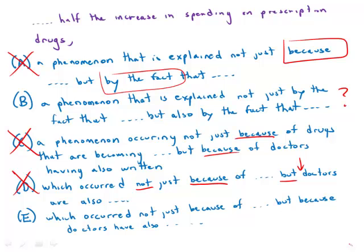Answer E correctly has 'not just because... but because,' placing the word because after both the not and the but — that's good. But looking carefully, the first element is 'because of more expensive drugs,' which is a prepositional phrase, and the second is 'because doctors have also written,' which is a full clause with a noun and a verb. A prepositional phrase cannot be parallel to a full clause, so technically that is not correct parallel structure either.